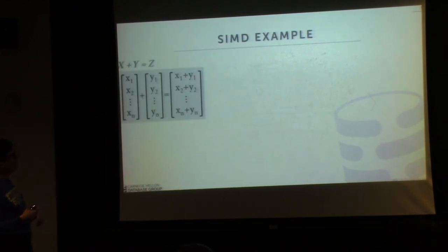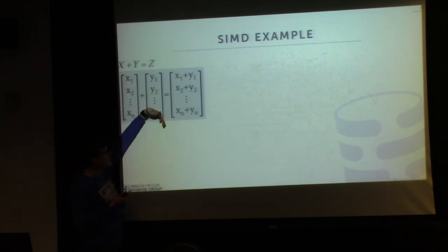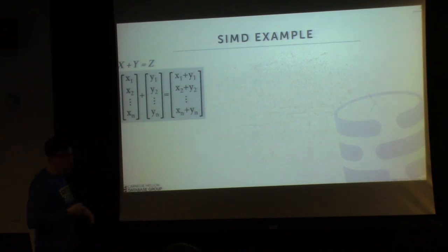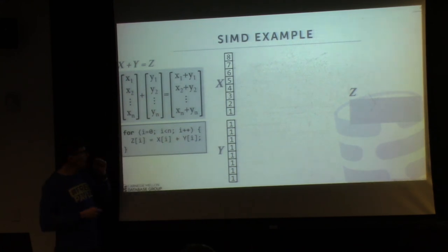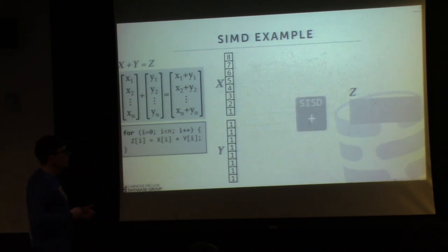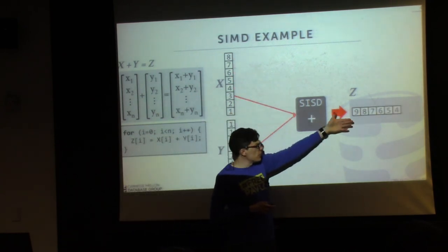At a high level, say we want to do the operation x plus y equals z, where x and y are vectors of integers. The output of this summation is another vector — just taking x1, y1 and producing a result, going across for all elements. The way you'd normally write this is as a for loop that iterates over every element of the two vectors, adds them together, and writes them out to an output buffer. To do this with SISD — single instruction, single data — you just iterate through every single element, add them together, and write them out.